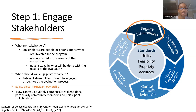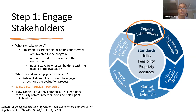The first step of the framework is to engage stakeholders. Stakeholders are people or organizations who are invested in the program, interested in the results of the evaluation, and have a stake in what will be done with the results. Thinking about equity in this step, you really want to encourage participant ownership and make sure that relevant stakeholders are engaged throughout the entire evaluation process, and also think about how you can equitably compensate stakeholders, particularly community members.